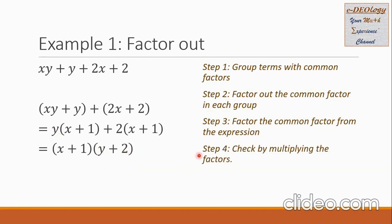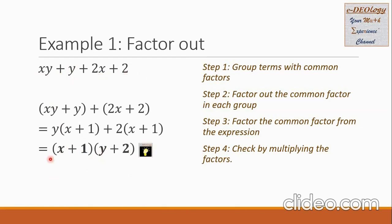In step 4, let us multiply the factors to check if our answer is correct. So x multiplied by y gives xy. x times 2 gives 2x. Then 1 times y gives back y. And 1 times 2 is 2. So these factors are the correct answer.